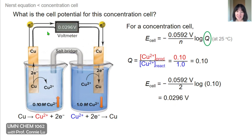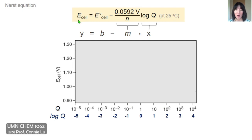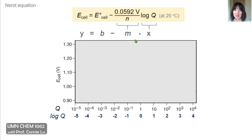The Nernst equation is also useful for tracking how cell potential changes as a reaction proceeds and Q changes. Treating the equation as a linear relationship, cell potential is the Y variable and log(Q) is the X variable. The standard cell potential is the Y-intercept, and the line has a negative slope equal to 0.0592 V divided by the moles of electrons transferred. In the plot, different magnitudes of Q along the X-axis correspond to log(Q) values.